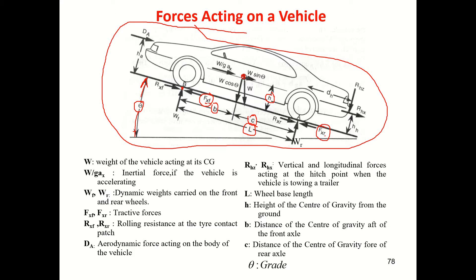These are rolling resistances: rolling resistance in the x-direction at the front wheel, and the rolling resistance along the x-direction acting at the rear wheel, that is at point A.